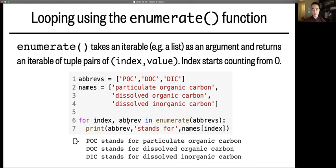And for each cycle of the for loop, it will unpack those tuples into the variables index and abbrev. So for instance, we can say print abbrev stands for names[index]. So here we're indexing into the list of full names, which is this variable here, using the indices that have been provided by enumerate, which again are 0, 1, and 2.